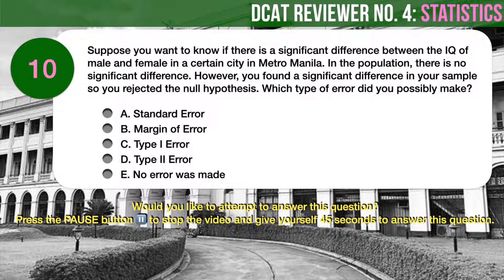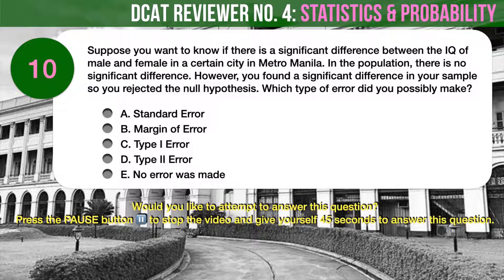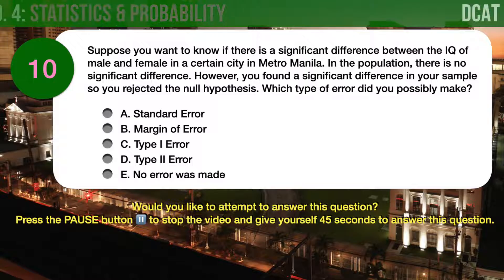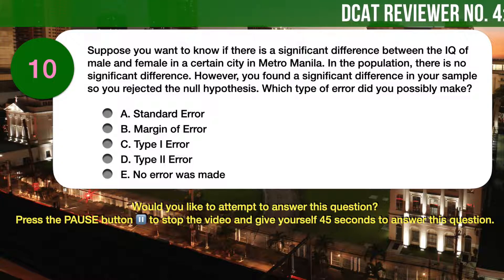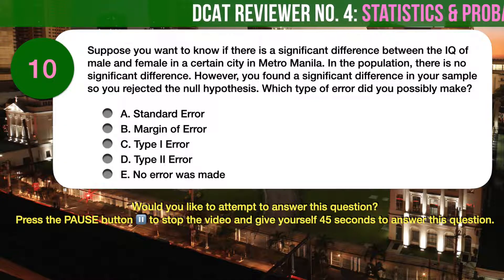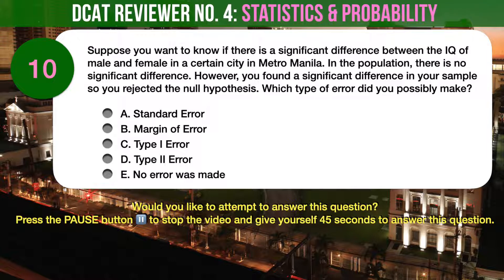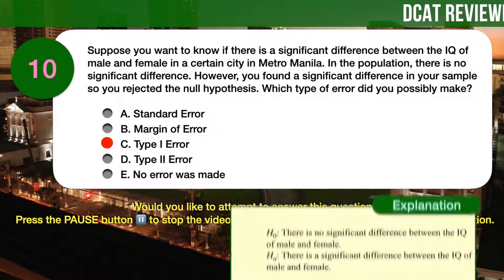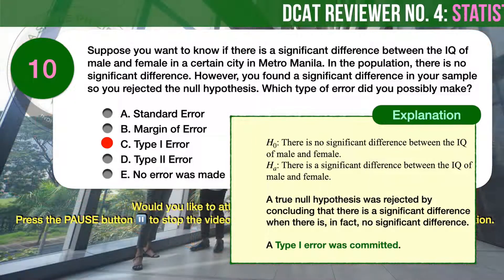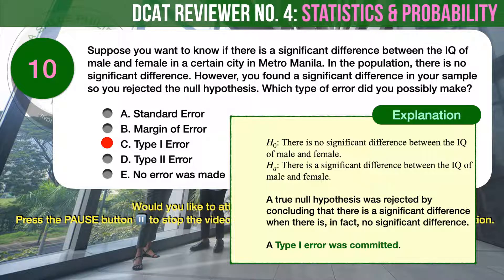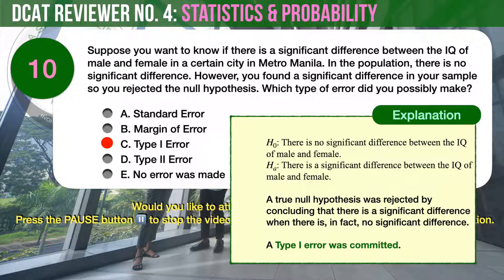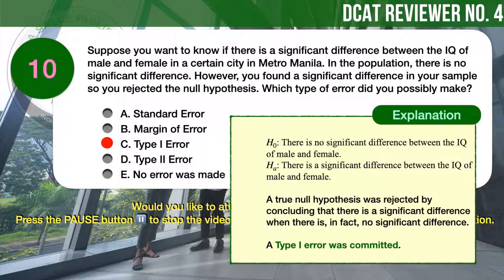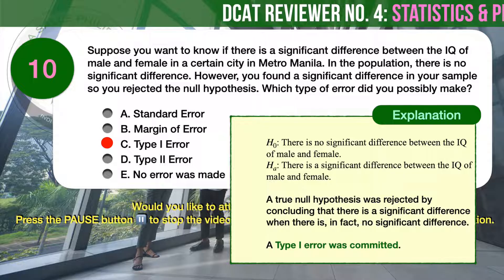Question number 10. Suppose you want to know if there is a significant difference between the IQ of male and female in a certain city in Metro Manila. In the population there is no significant difference; however, you found a significant difference in your sample, so you rejected the null hypothesis. Which type of error did you possibly make? A, standard error. B, margin of error. C, type 1 error. D, type 2 error. E, no error was made. The correct answer is C, type 1 error. A type 1 error occurs during hypothesis testing when a null hypothesis is rejected even though it is accurate and should not be rejected. In this question, a true null hypothesis was rejected by concluding there is a significant difference when in fact there is none — a type 1 error was committed.